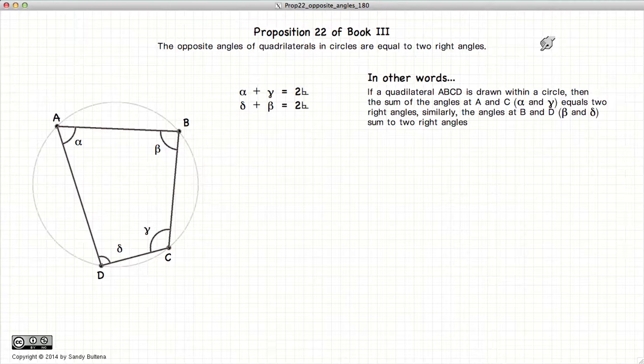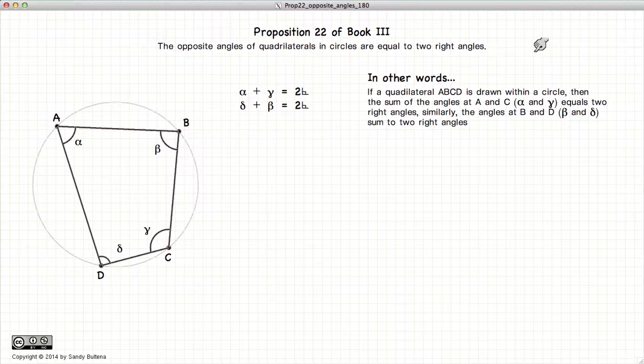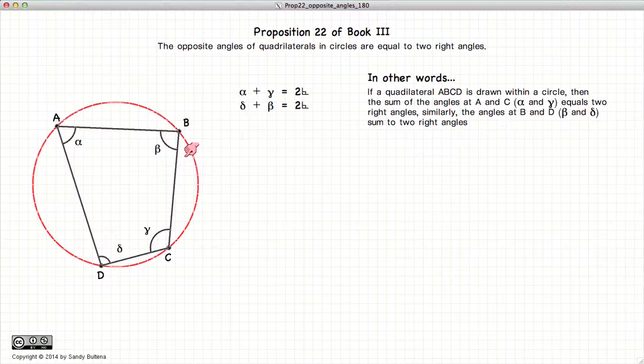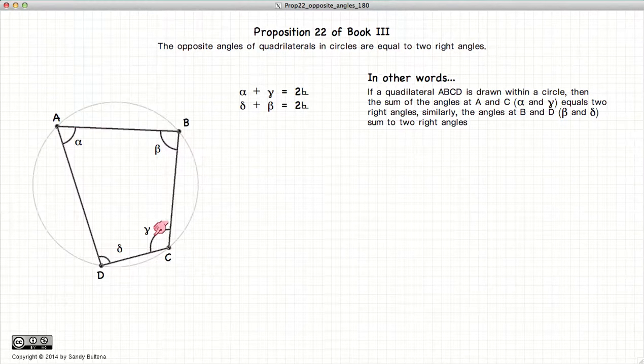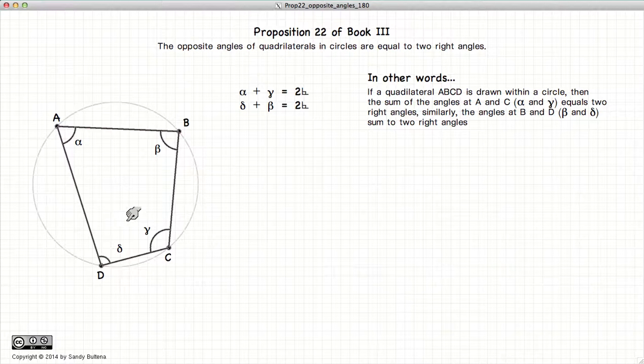This video presentation is going to be on Proposition 22 of Book 3, which states that if we have a circle and we draw within the circle a quadrilateral such that each of the vertices touches the circumference of the circle, then the interior and opposite angles, in other words alpha and gamma will sum to two right angles or 180 degrees, and beta plus delta will also sum to two right angles.